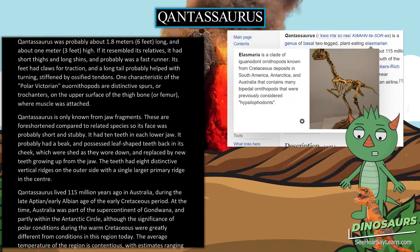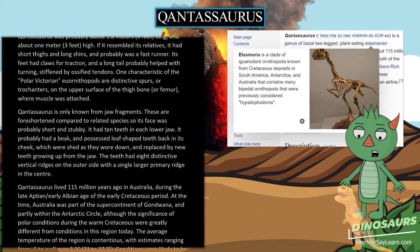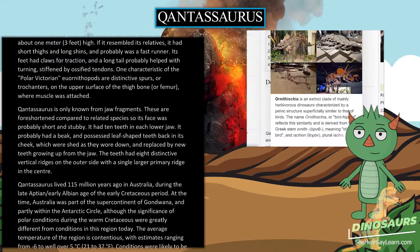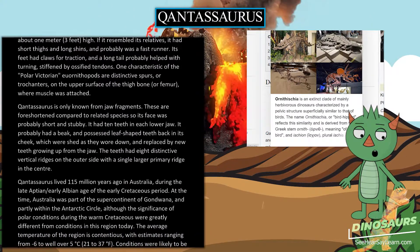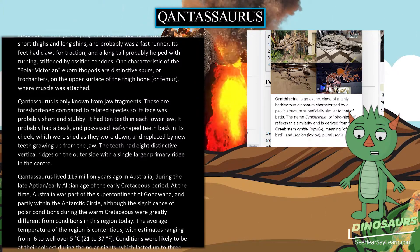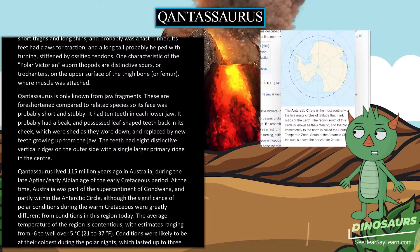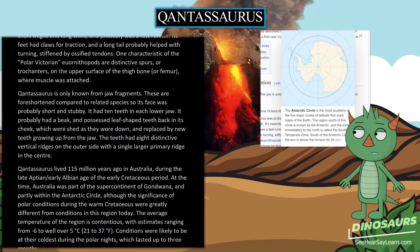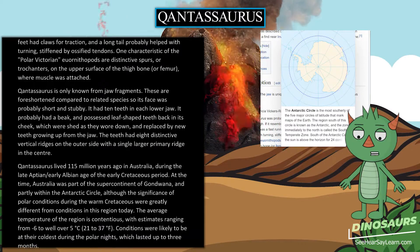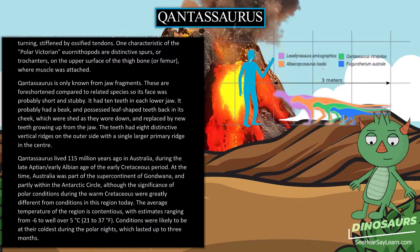It probably had a beak, and possessed leaf-shaped teeth back in its cheek, which were shed as they wore down and replaced by new teeth growing up from the jaw. The teeth had eight distinctive vertical ridges on the outer side with a single larger primary ridge in the center.